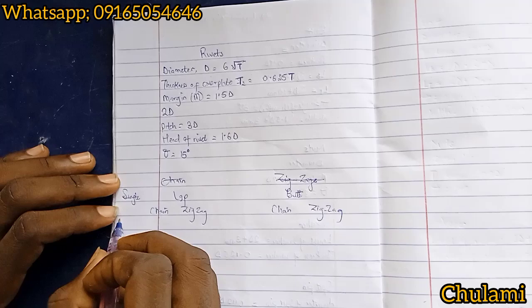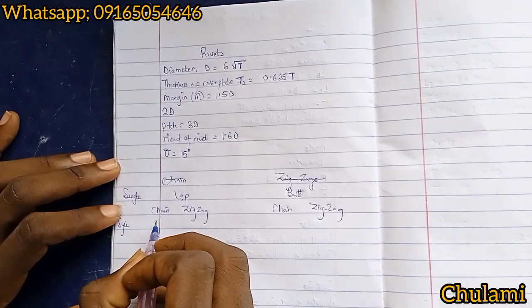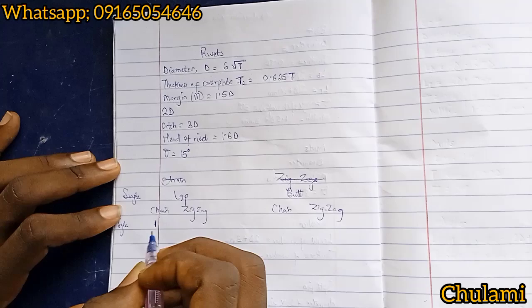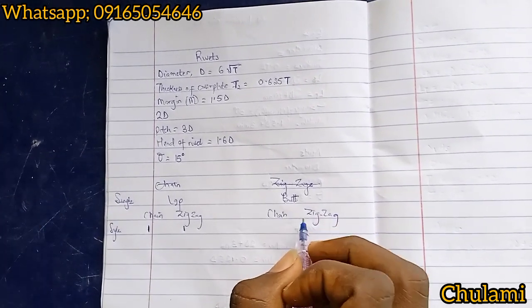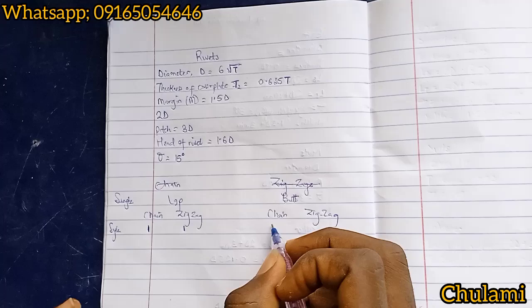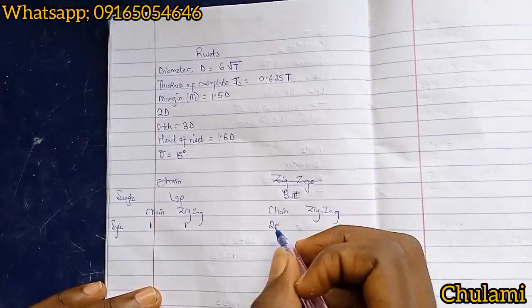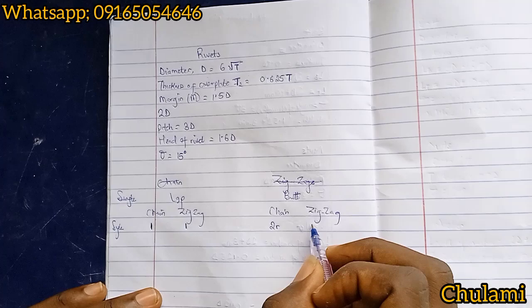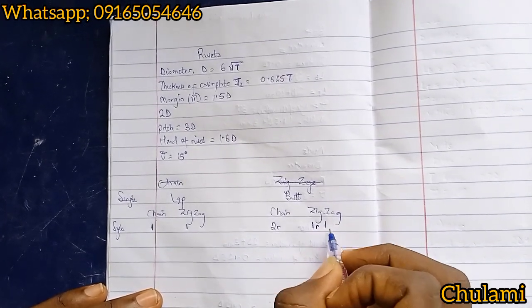Now you know there are two types of rivets. This is for lap joints and for butt joints. For single riveted lap joints, if it's chain you have to draw one rivet. Zigzag is one rivet. But in butt joints you are drawing for chain two rivets where the two are real, while zigzag you also draw two rivets but one will be real, one will be imaginary.